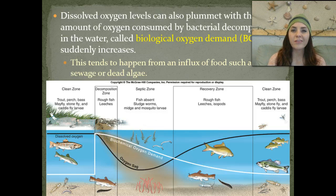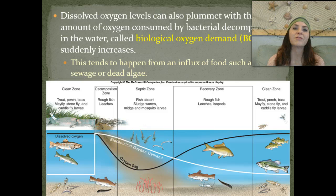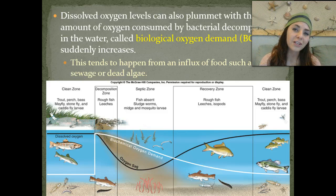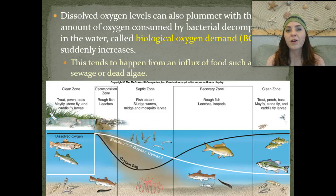If we have an overflow of sewage and it goes into the water, the dissolved oxygen content can plummet because of the algal blooms. The bacteria get really excited and use up all of the oxygen, and they don't leave enough for other species of animals.